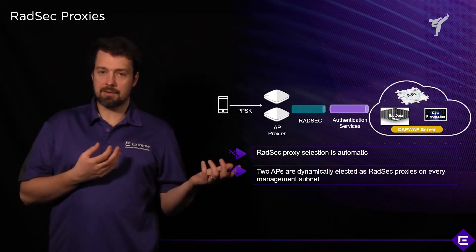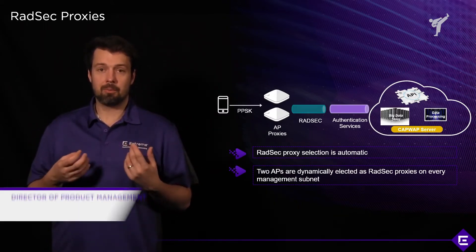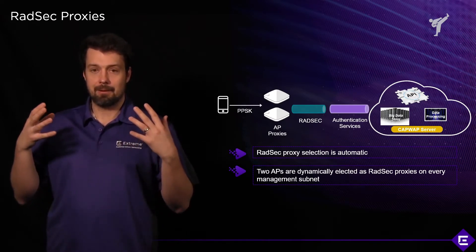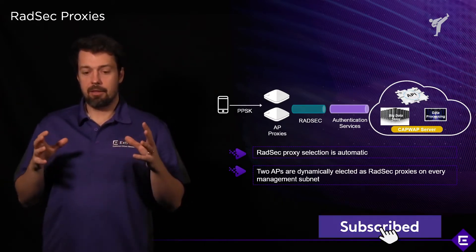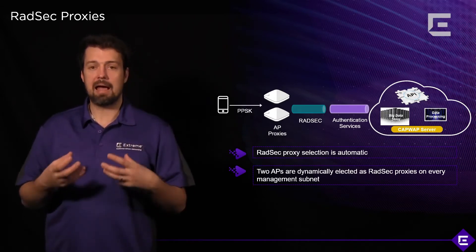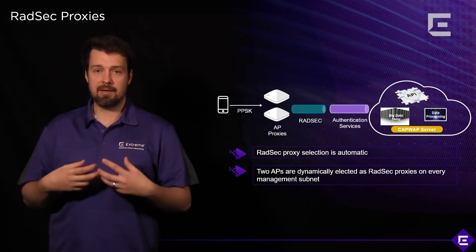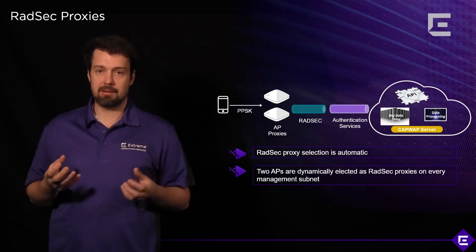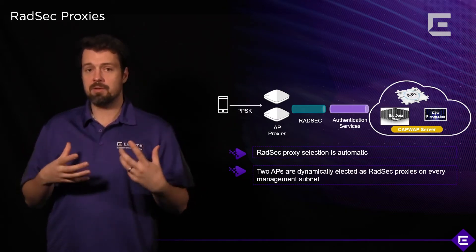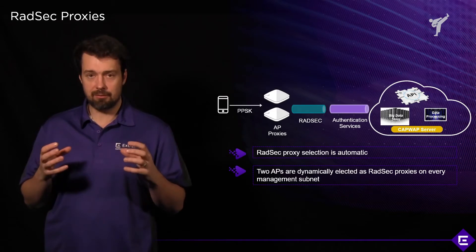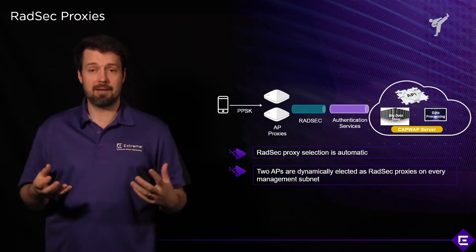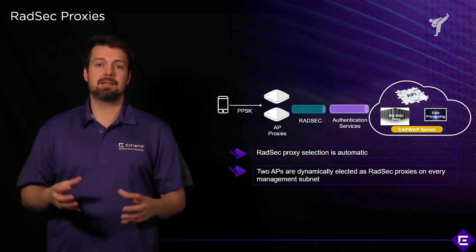To make communication between local access points and Extreme Cloud IQ more efficient, and not to build an additional TLS tunnel for every single AP — which would cause a lot of load on your network and cloud infrastructure — the access points elect what we call RATSEC proxies. Every access point management subnet will have two RATSEC proxies running in it, selected through a voting mechanism using cooperative control protocols. Those two devices are the only ones that build a RATSEC tunnel to Extreme Cloud IQ, minimizing the number of tunnels and load on the network.